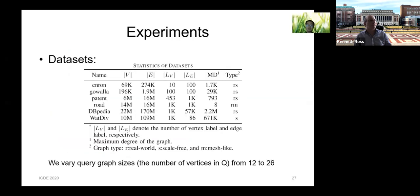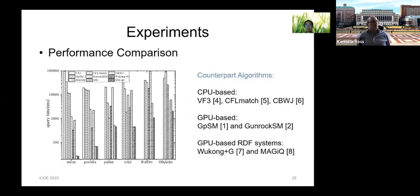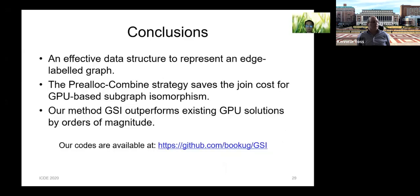The datasets used include DBPEDIA and WATERDIV as RDF datasets, with the default query size of 12. We compare GSI with both CPU-based and GPU-based algorithms, as well as RDF systems. GSI outperforms all counterparts on all datasets by several orders of magnitude. In conclusion, the GSI algorithm performs well and its techniques shed new light on GPU algorithm optimization. The code has been released on GitHub.